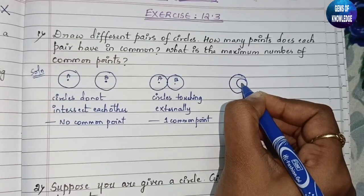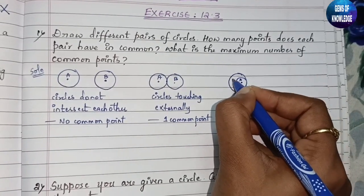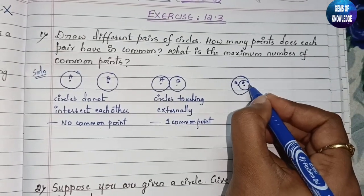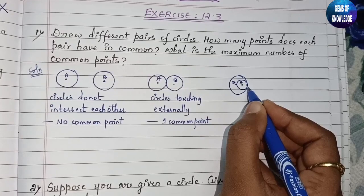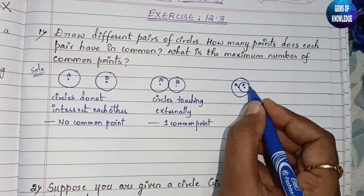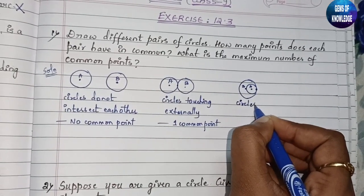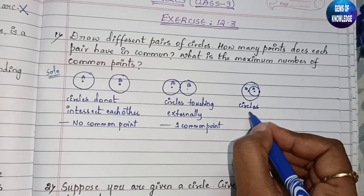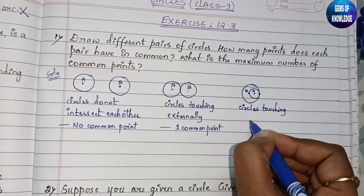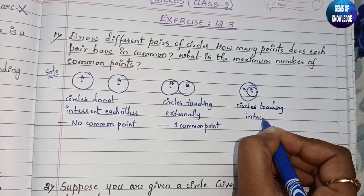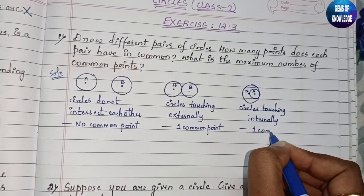Next, we can draw the circles like this. This is center A and this is center B. This is the point which is touching both circles. We can say these are circles touching internally, and here also there is one common point.